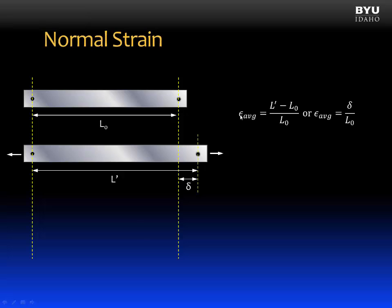And we can define normal strain as follows. First of all, notice that normal strain is going to be given the Greek letter epsilon. We're going to refer to this strain as average strain. It's the average normal strain that's occurring between these two points. And we'll define it as the new length after it's been deformed minus the original length between the two points, all divided by the original length.